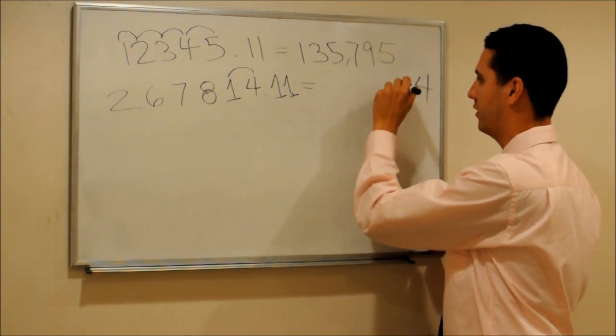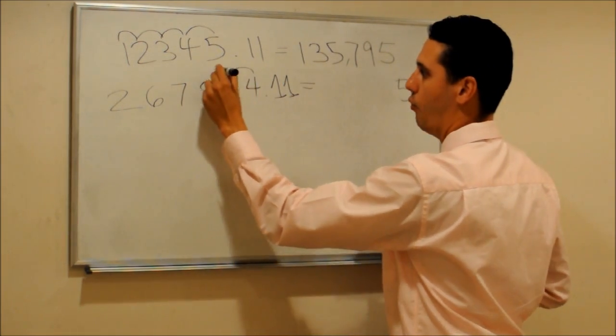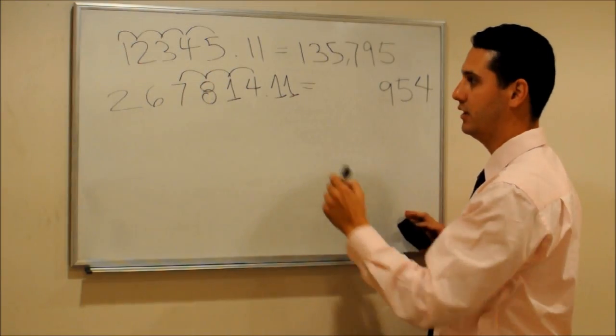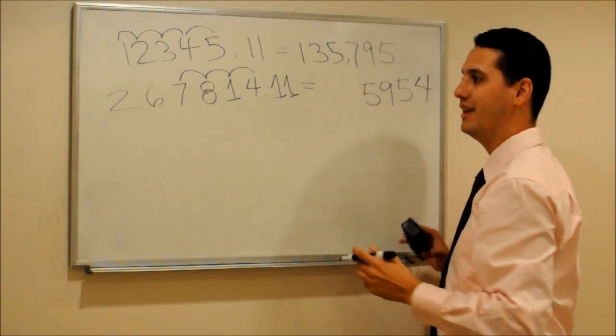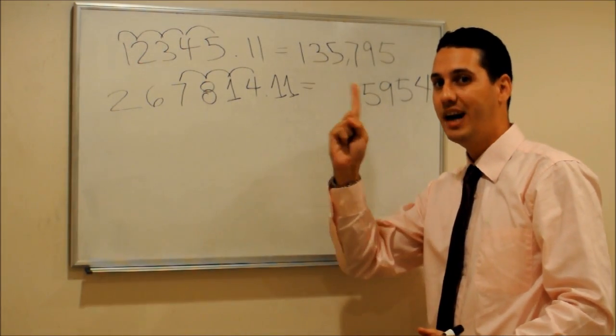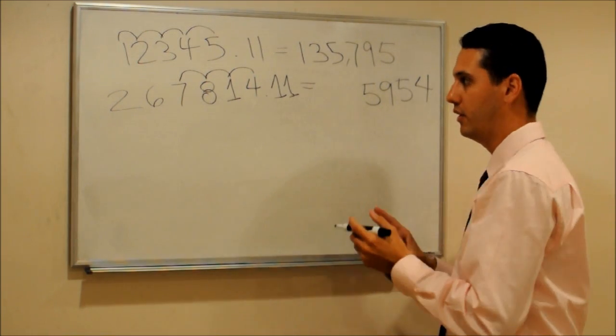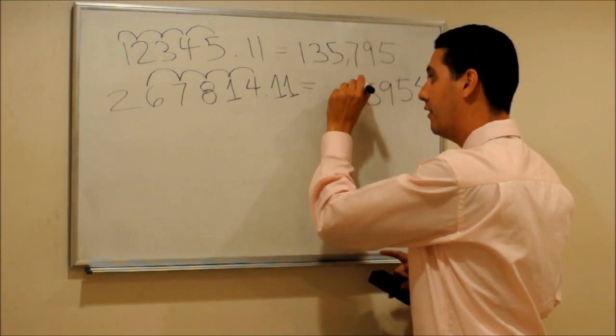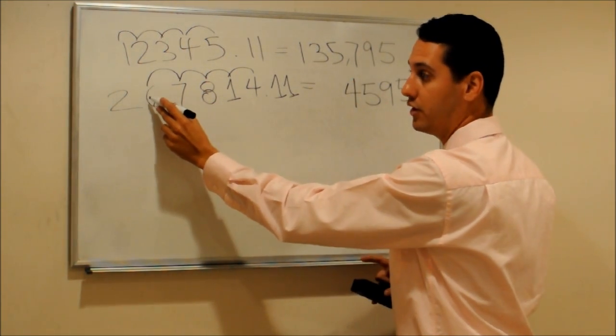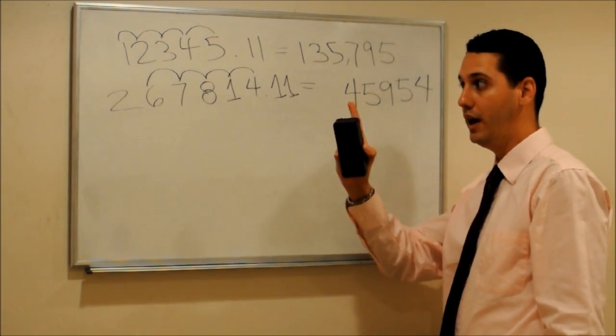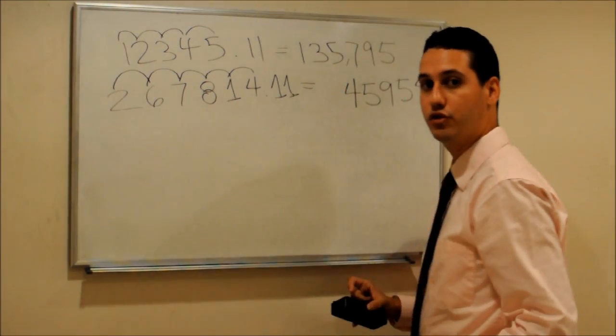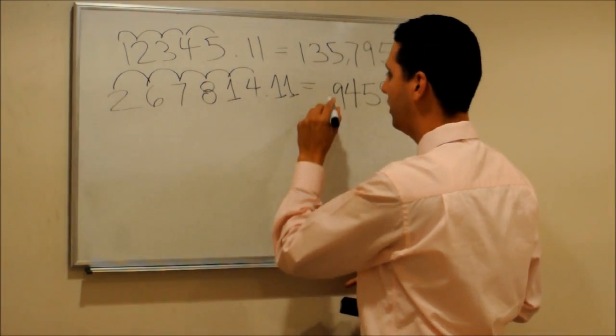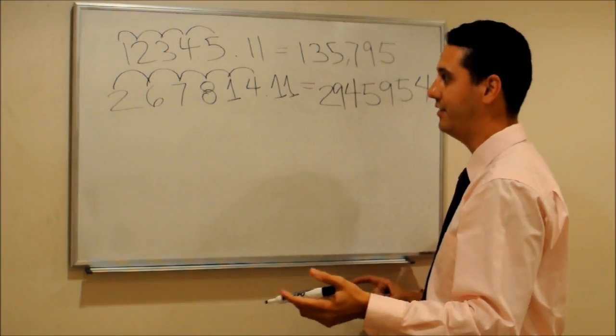4 plus 1? 5. 1 plus 8? 9. 8 plus 7? 15. Instead of writing the 15, we say 5, and we carry 1 to the next step. What is the next step? 7 plus 6? 13. Plus 1 that I was carrying? 14. So 7 plus 6, 13, plus 1, 14. I'm carrying now another one for the next step. 6 plus 2? 8. Plus 1 more? 9. And finally, we write the 2 here. And that's the answer. The answer will be the number 2,945,954.